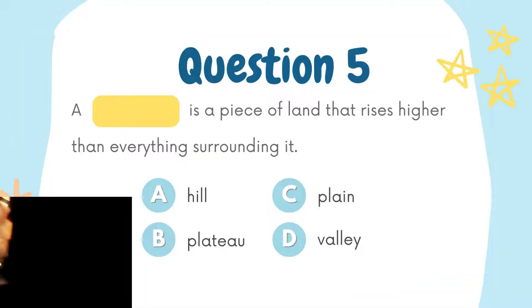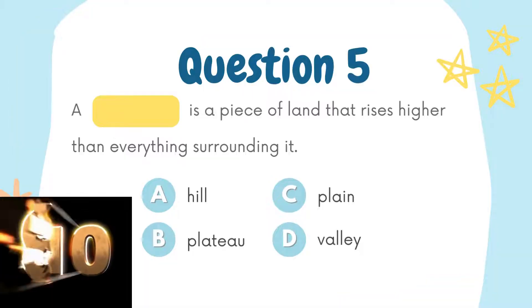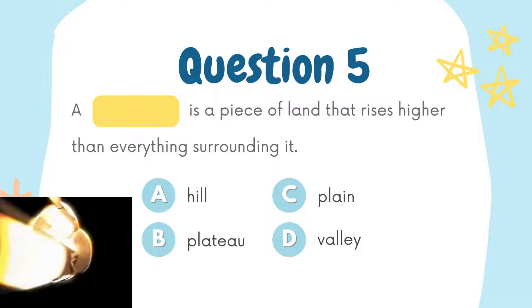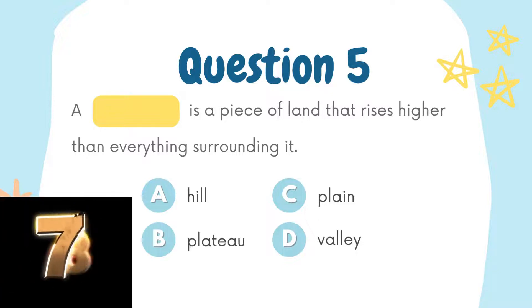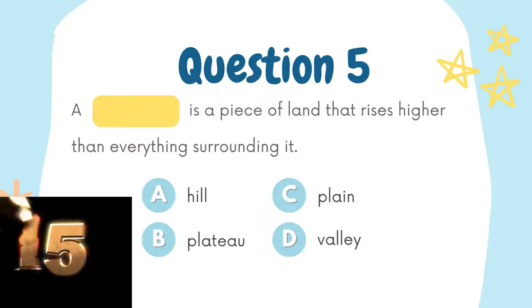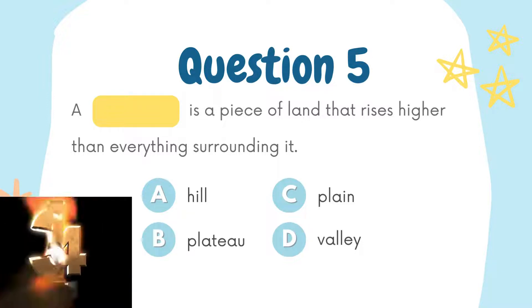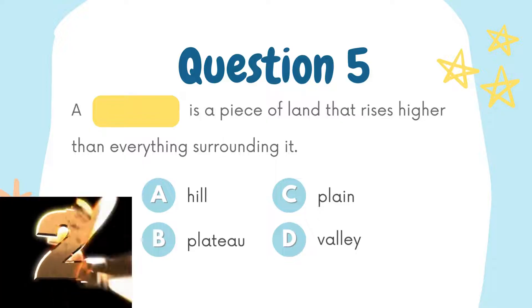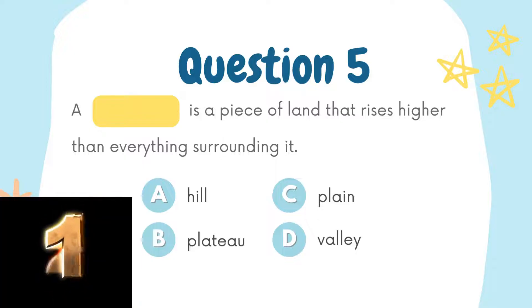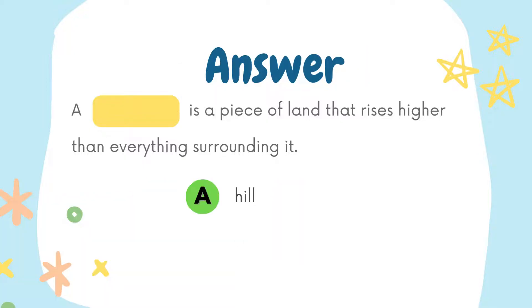Here is your question number 5. It's a piece of land that rises higher than everything surrounding it. Option A: Hill. Option B: Plateau. Option C: Plain. Option D: Valley. And the right answer is Option A: Hill.